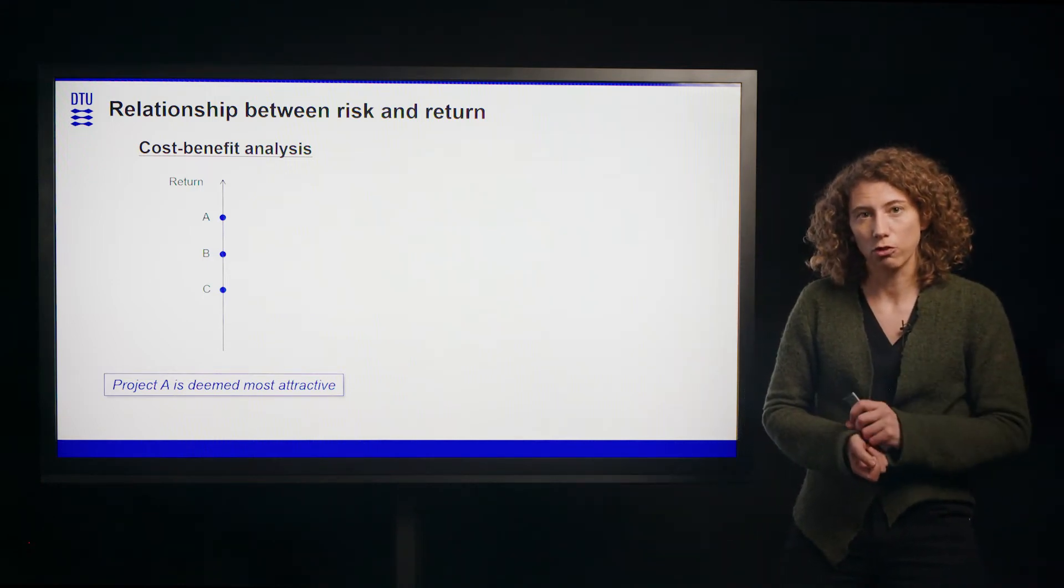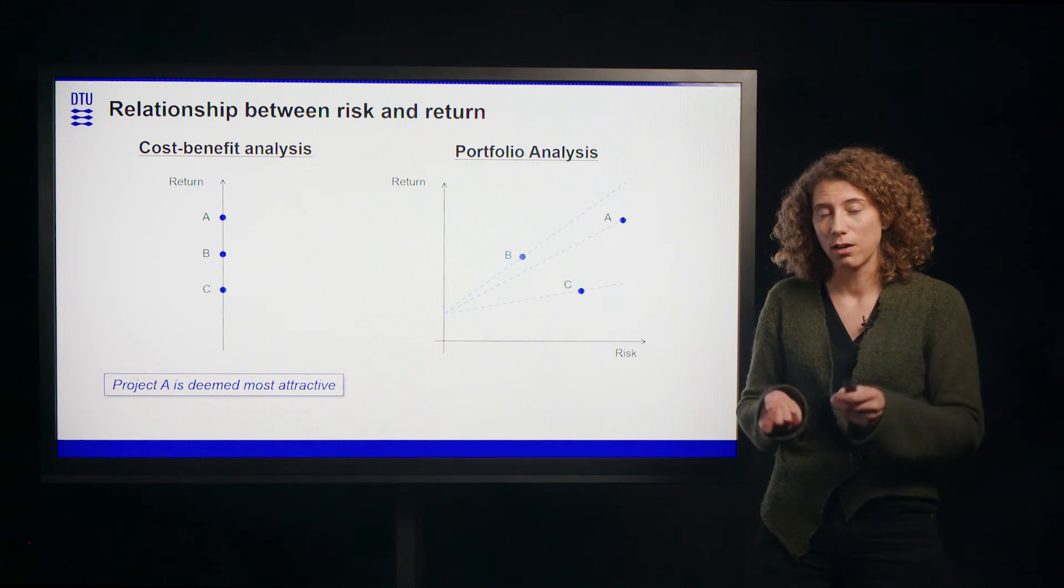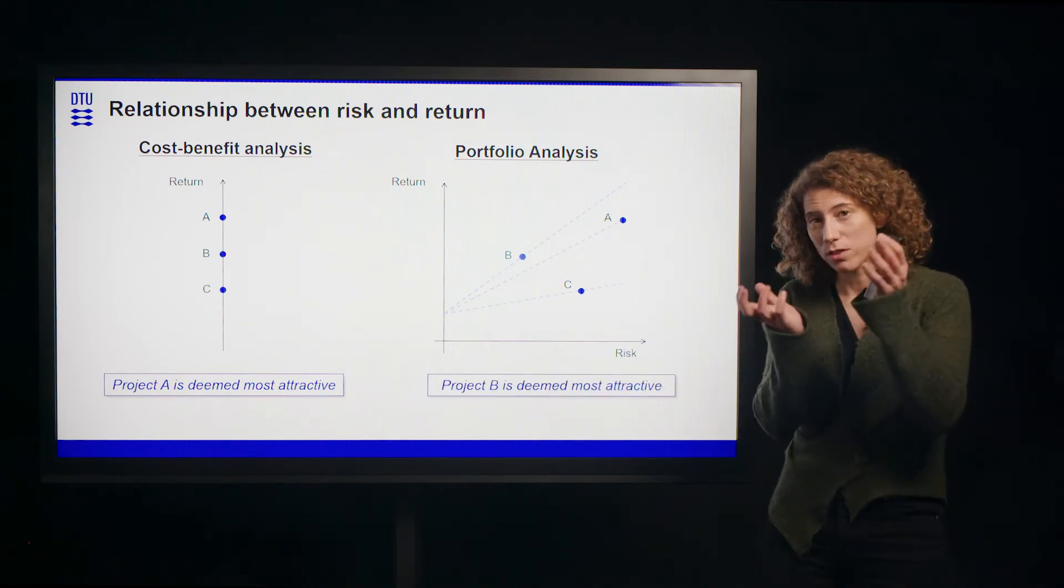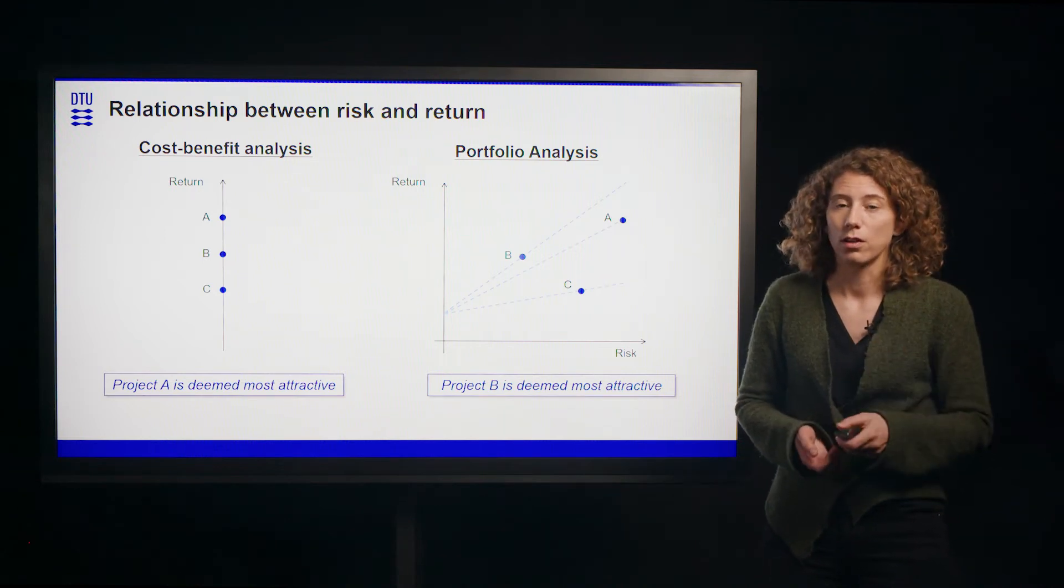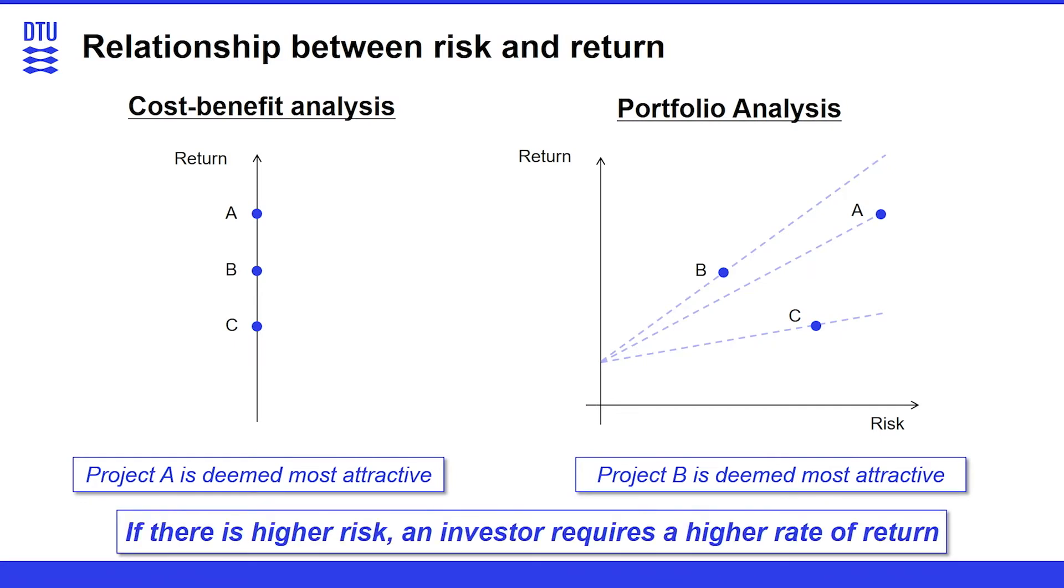And how uncertain this is can be shown with this enlarged graph where we have two axes, the return and the risk. And here you can already see that project A, which gives the highest return, actually also gives the highest risk or has the highest risk. So it is not so clear anymore if that's the one that we find most attractive. In fact, we can start analyzing the risk return relation of those projects. And you can see here that B has the steepest line, which is then obviously also the project with the best risk return relationship here. And this would be the one that in portfolio analysis would be deemed the most attractive project. The takeaway is if there is higher risk, an investor requires a higher rate of return. We look always at both indicators at the same time.